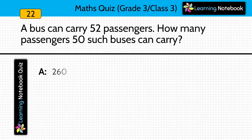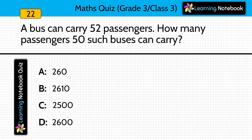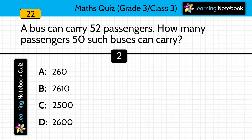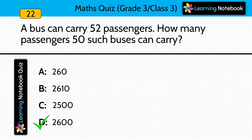Question twenty-one: a bus can carry 52 passengers. How many passengers can 50 such buses carry? Answer is 26,000. Multiply 52 by 50 to get 26,000.